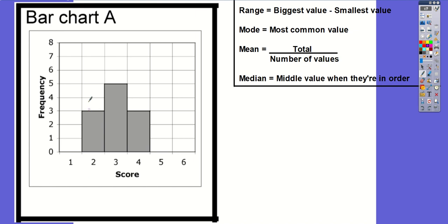What I've got on bar chart A, I've got a score down here at the bottom — you might want to think of this as the score that you get on a die when you roll it, because it goes from one to six. And then up the side here, this is the frequency, which is how many times that value is achieved.